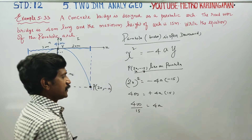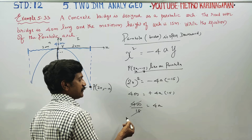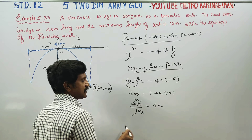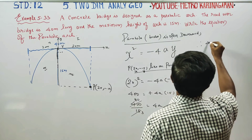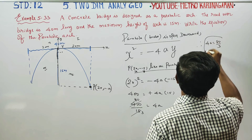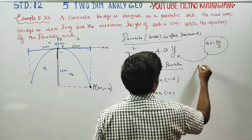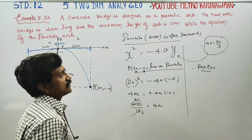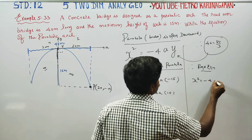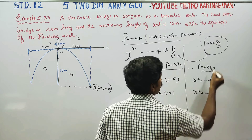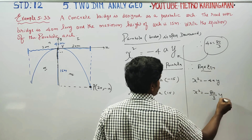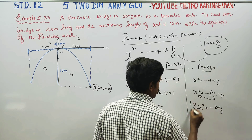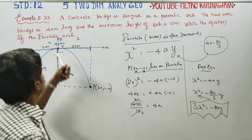Therefore, 4a = 400/15. Cancelling — 5 eights are 40, 5 threes are 15 — therefore 4a = 80/3. Substituting, the required equation of the parabolic arch is x² = -(80/3)y. Cross-multiplying: 3x² = -80y is the equation of the parabolic arch.